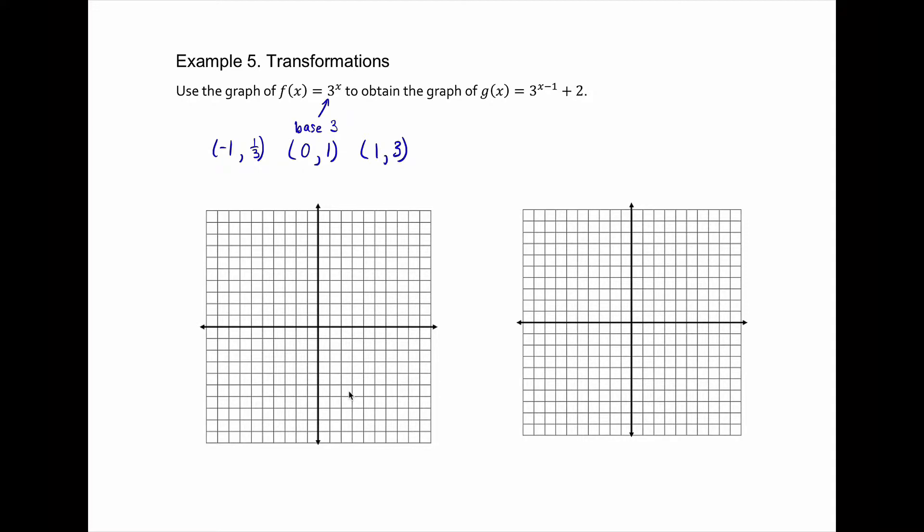So just using those 3 points, you'd have negative 1, 1 third, 0, 1, and 1, 3. Of course, you could do 2, 9 also if you wanted just a little bit better of a curve.